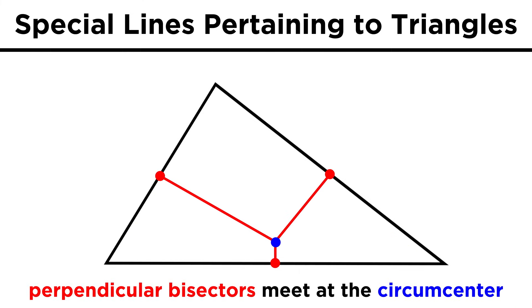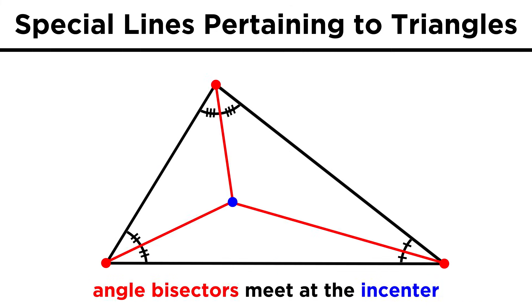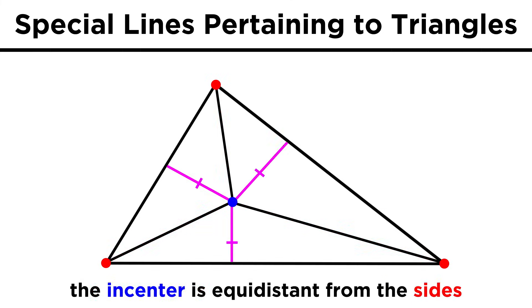So to quickly summarize, the point where perpendicular bisectors meet is called the circumcenter. Notice the right angles at the midpoints of the sides. This will be equidistant from the vertices. The point where the angle bisectors meet is called the in-center. This will be equidistant from the sides.